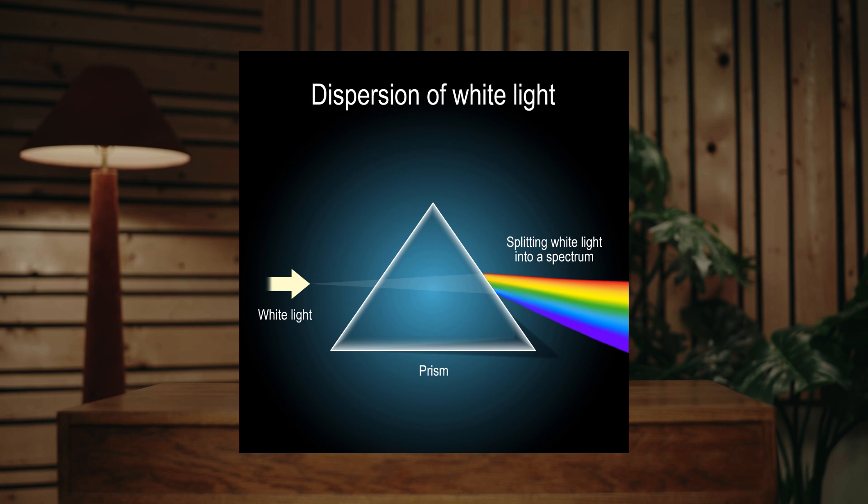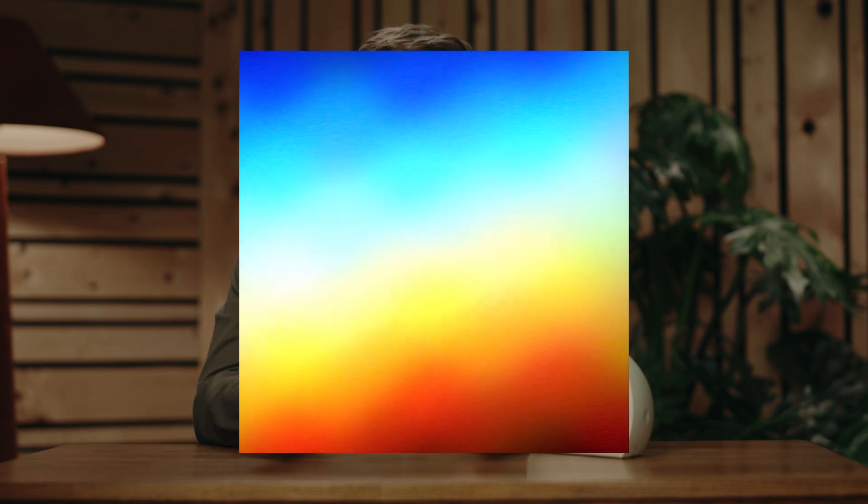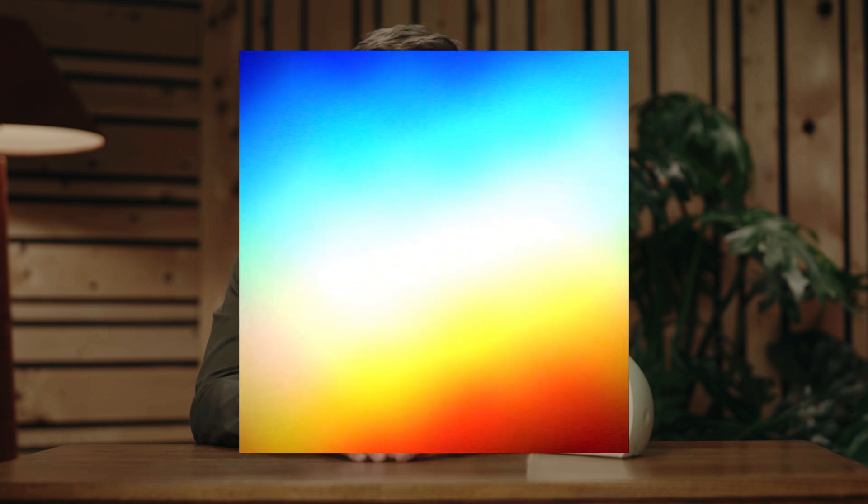White noise is called white noise because of a comparison to light. If you take all of the visible wavelengths of light and combine them together you end up with white light. In the same way, if you take all of the frequencies of audio that you can hear and play them at the same time at the same volume, you get white noise.